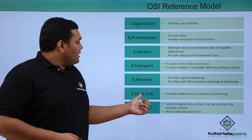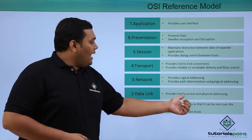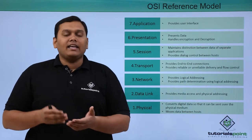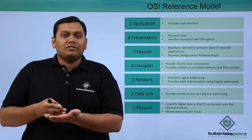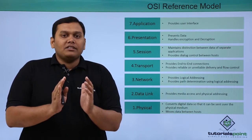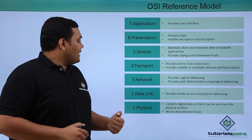Coming to the data link layer — data link layer provides media access and physical addressing, like MAC addresses. All physical addressing is done in the data link layer.